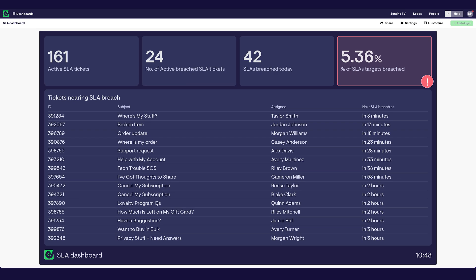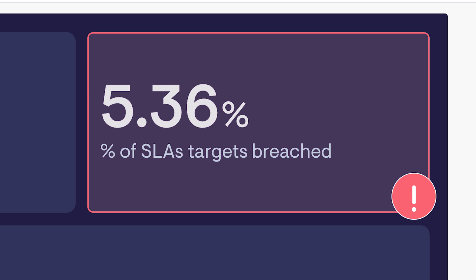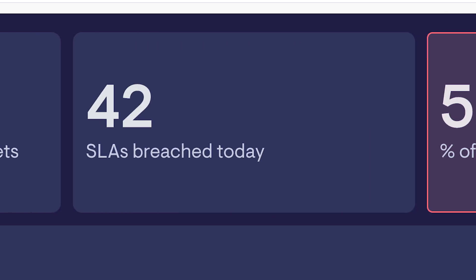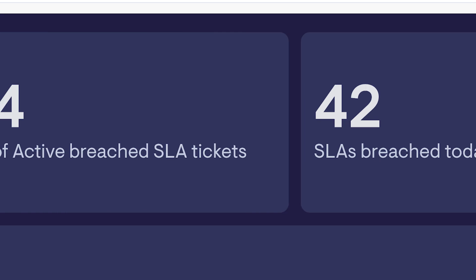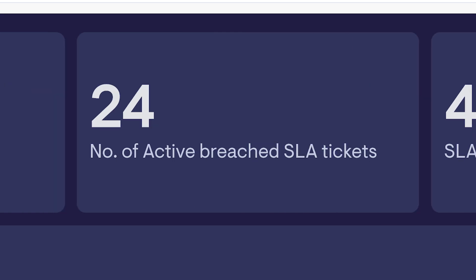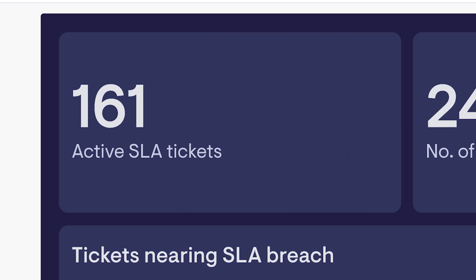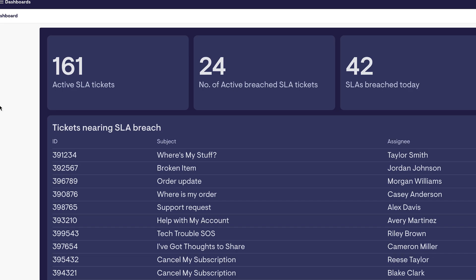Then I've got some high-level metrics which show what's happening with regards to our SLA performance right now. I can see the number of SLAs that have been breached today, the number of tickets still active which are in breach of their SLA, and the number of active tickets which have an SLA policy attached to them.